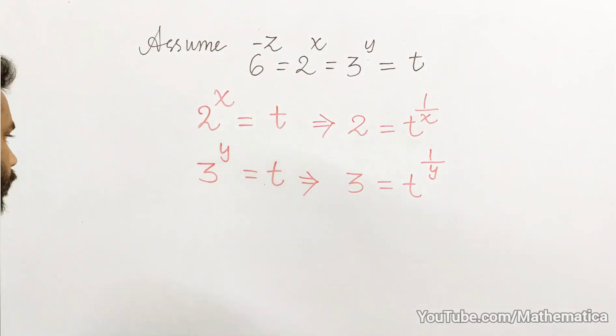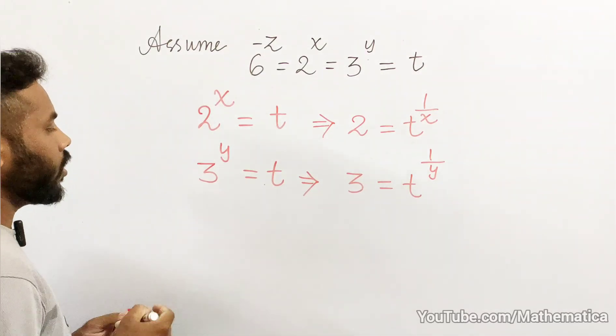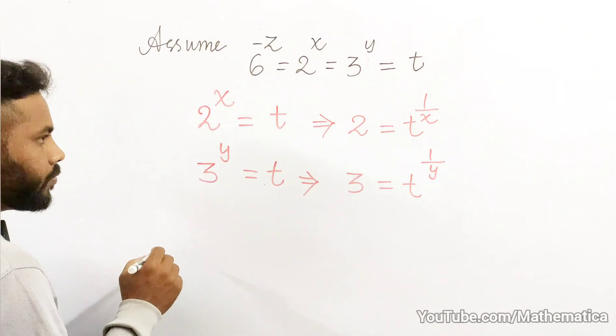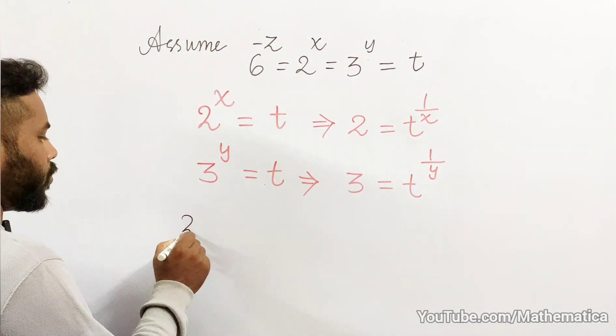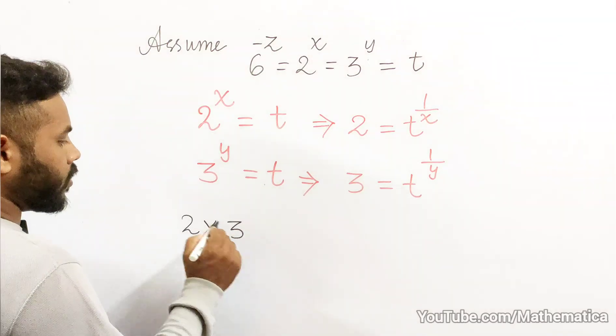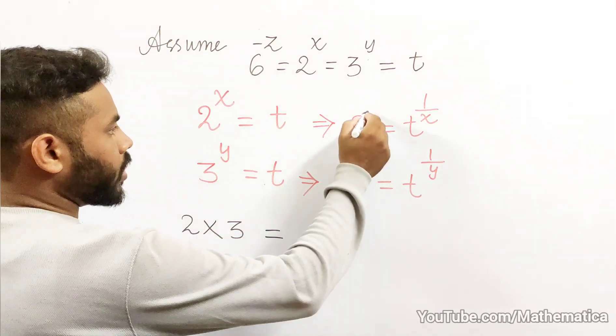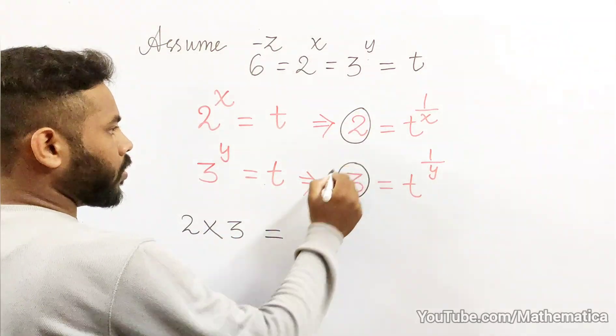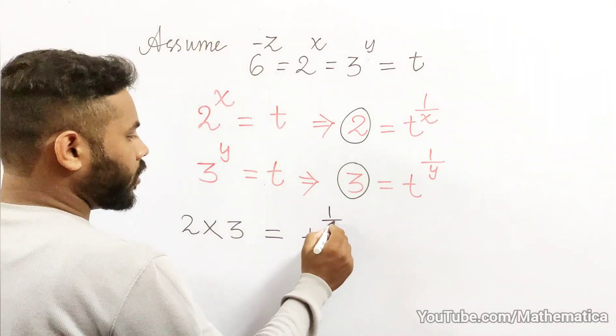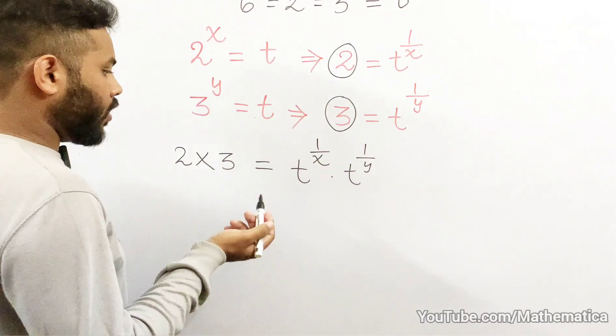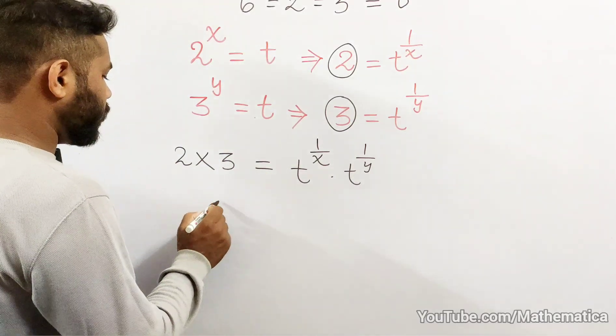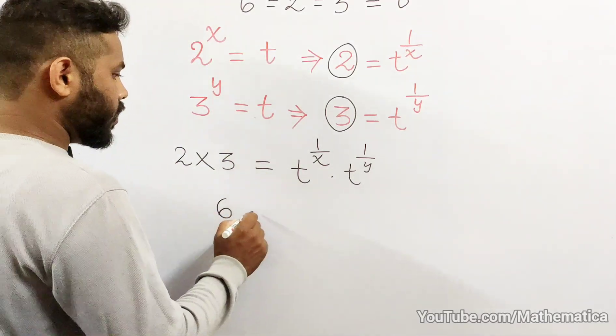Now see that if you multiply 2 into 3, if you multiply these two, then you are actually multiplying t into t, and now this is equals to 6.